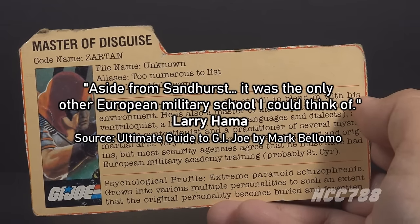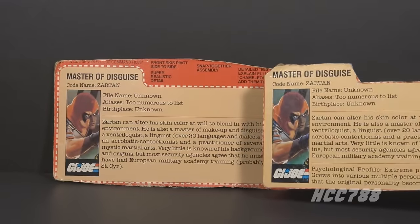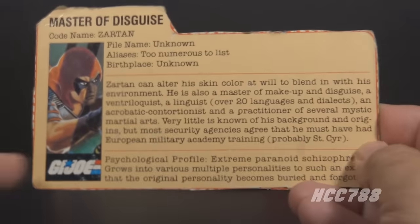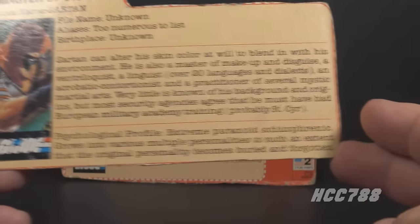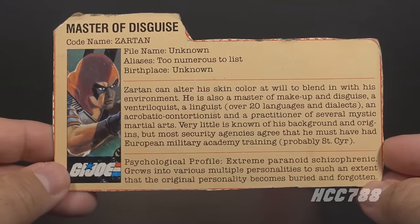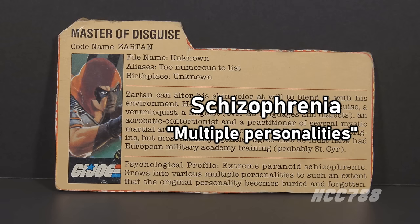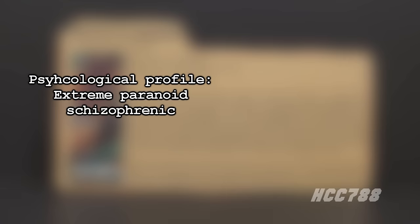About the Saint-Cyr reference, Larry Hama has said, 'Aside from Sandhurst, it was the only other European military school I could think of. A European military school is where you would get training to be a ventriloquist contortionist acrobat, to prepare them for Europe's ongoing war against carnies.' If the file card had stopped there, there would be no controversy. And as you can see on the later file card release, that is the only text. But on the first release of the file card, there was a second paragraph — the psychological profile.